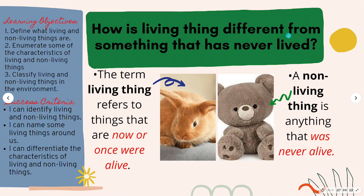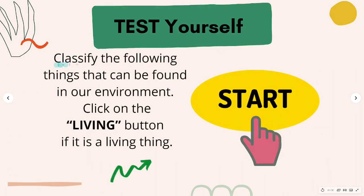How is a living thing different from something that has never lived? This is a rabbit and this is a teddy bear. The term living thing refers to things that are now or once were alive — the rabbit is the living thing. A non-living thing is anything that was never alive — the teddy bear here was never alive. Now, classify the following things that can be found in our environment. Click on the living button if it is a living thing, or click the non-living button if it is a non-living thing.